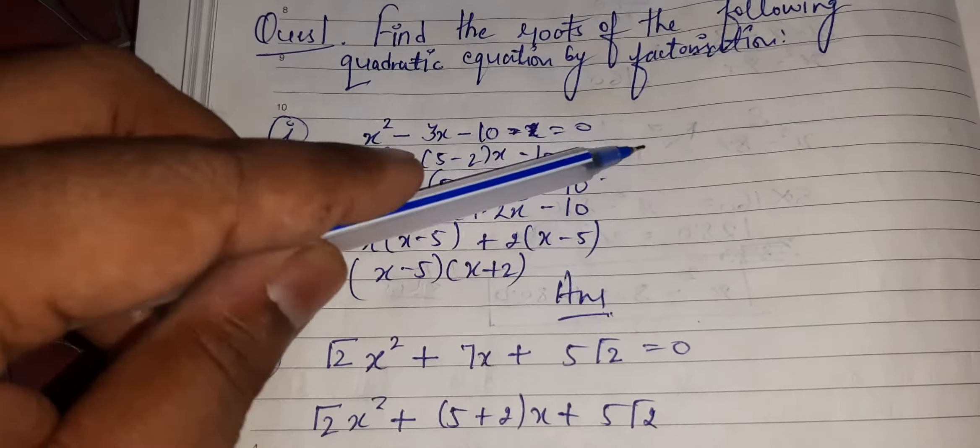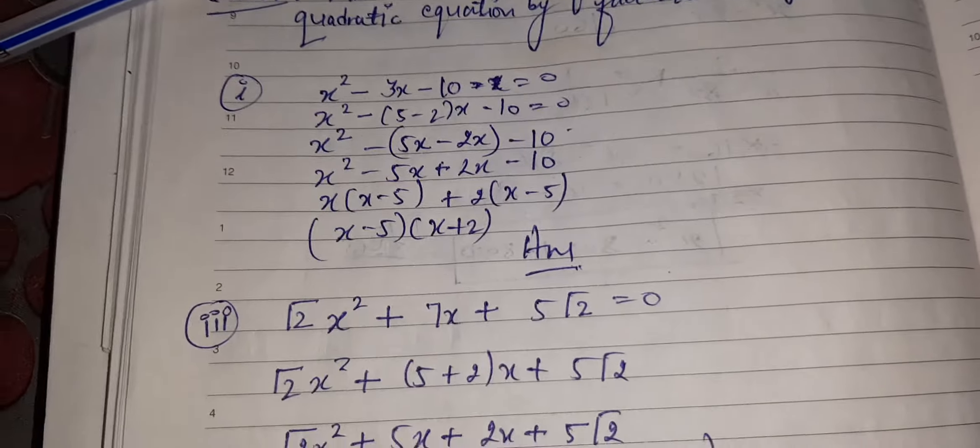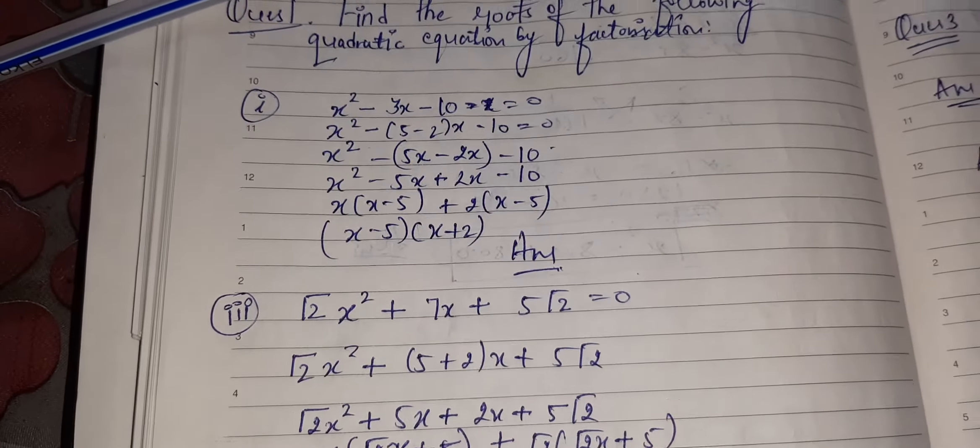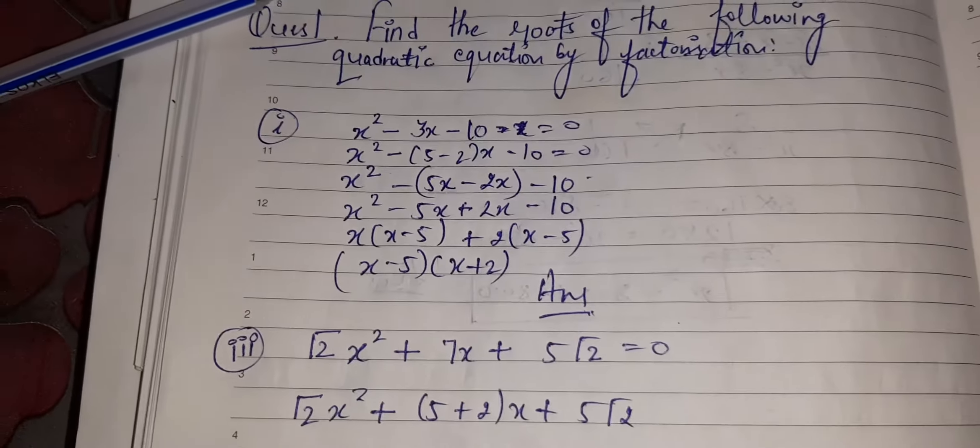x² - 3x - 10 = 0. I have to break 3 into two parts, that is 5 minus 2 is 3, and 5 times 2 is 10. Remember the middle term formula - in the same manner we are doing it.